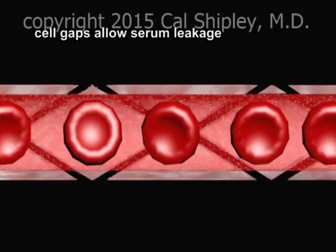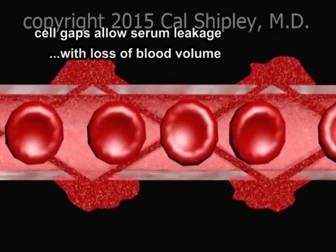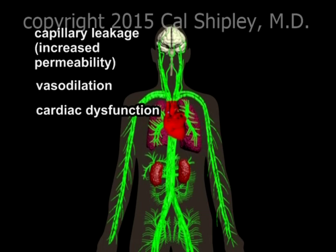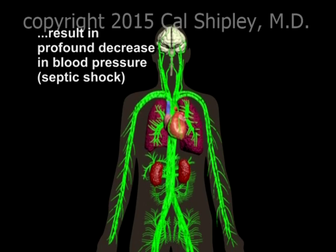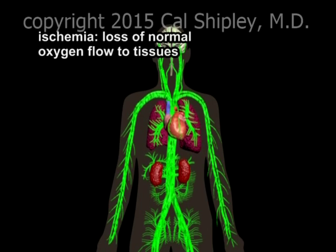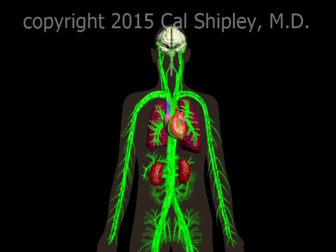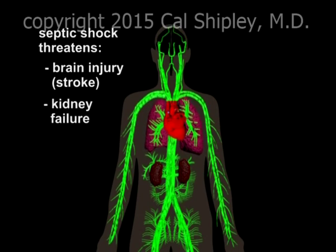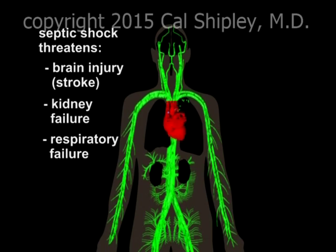This leakage of serum can occur on a widespread basis throughout the body, resulting in a profound decrease in total blood volume. Increased capillary permeability, in conjunction with abnormal dilation of blood vessels and decreased heart contractility, results in a profound lowering of blood pressure, also known as hypotension. This is septic shock. The loss of blood pressure results in a drastic reduction in the body's ability to deliver oxygen to its tissues via the vascular system, a situation known as ischemia. The ischemia associated with septic shock threatens all bodily tissues and organs, and if not reversed, can result in stroke, kidney failure, respiratory failure, cardiac arrest, and death.